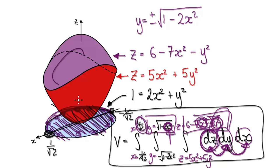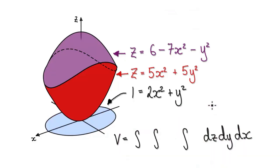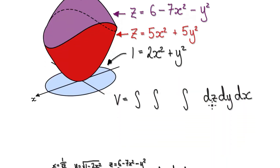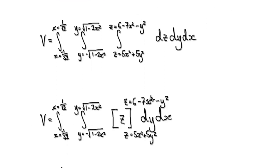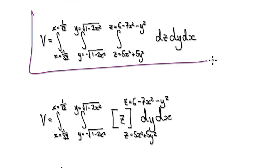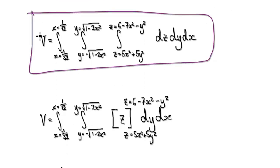So this complicated volume is given by the triple integral we set up. We're going to continue evaluating it in the next video.